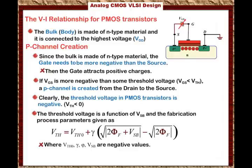That is a very important thing to watch out for. Another important observation: if VS equals VB — if the source and the body are connected together — that means VSB is zero, and the threshold voltage Vth equals Vth0. Vth0 is the threshold voltage when the source and body are connected together. If the source and body are not connected, the threshold voltage will be more negative, because γ is a negative parameter and the overall threshold voltage becomes more negative when VSB is non-zero.